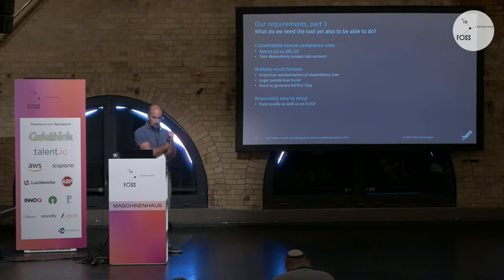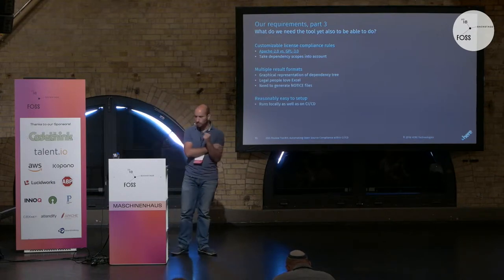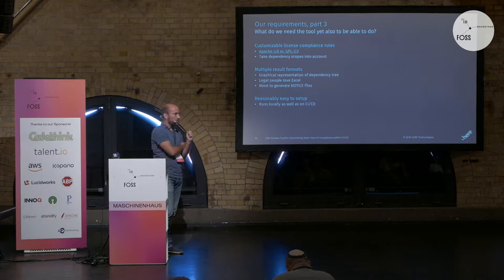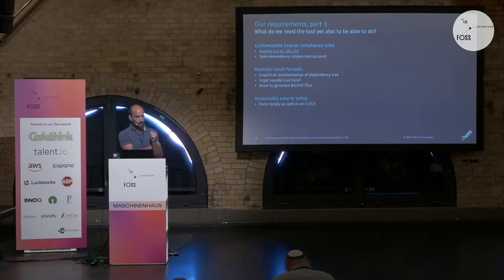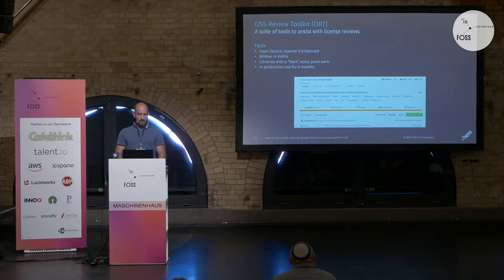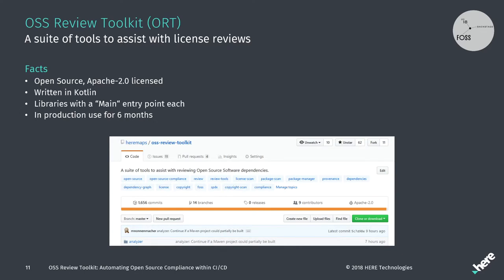Taking all of these requirements together, after a long-running evaluation, we came to the conclusion there is nothing on the market that we could buy or use that fulfills all of these needs. So we came up with the Open Source Review Toolkit, or ORT for short. Like I said, it's just a suite of command line tools that are supposed to be plugged together. The tool itself is open source, it's on GitHub already, and it's Apache 2 licensed.